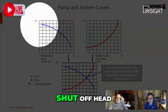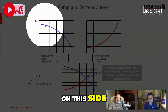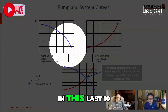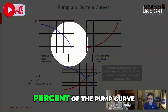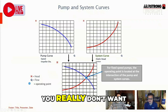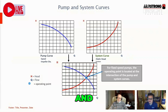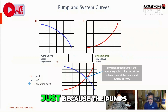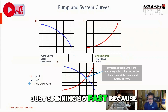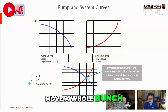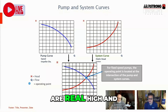So we go from over here, and this is known as shutoff head on this side, and this is known as runout. Once you get out in this last 10%, 15% of the pump curve, you really don't want to run there. You start to get into the unstable region of the curve. You really don't want to be running out in that range. Is this because the pump's just spinning so fast because of lack of pressure? Yeah, the pump is trying to move a whole bunch of water, and the velocities are real high.